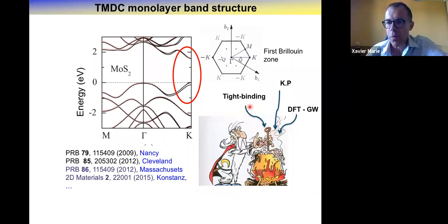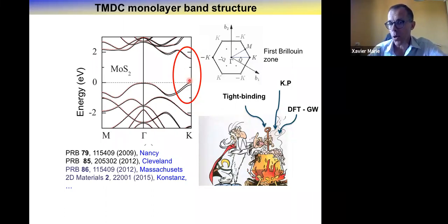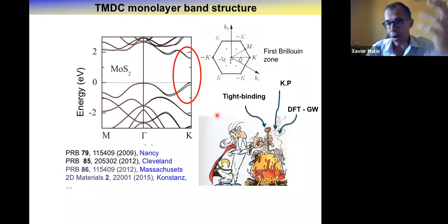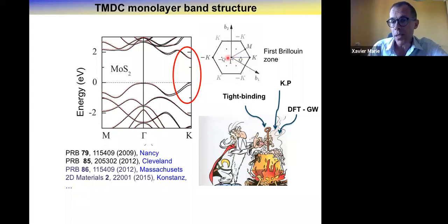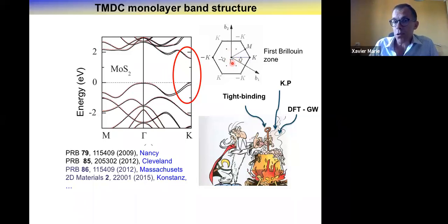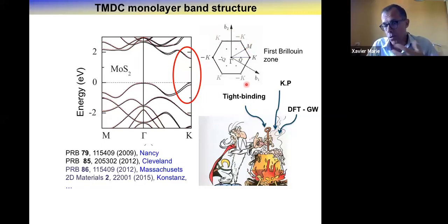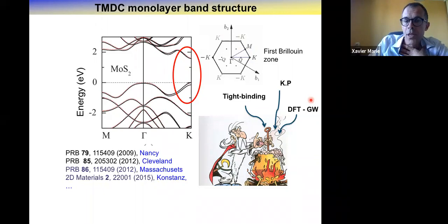All these band structure calculations confirm that indeed you have a direct gap, with electron and hole states coinciding in reciprocal space at the minimum energy, lying in the K valley. If you are used to optoelectronics of III-V or II-VI semiconductors, this is very different, because in those well-known materials for optoelectronics the optical transitions involve electron-hole states lying at the center of the Brillouin zone at Γ. Whereas here we deal with optical transitions where the electron and hole states lie at the edges of the Brillouin zone, which changes the symmetry and opens very interesting properties.